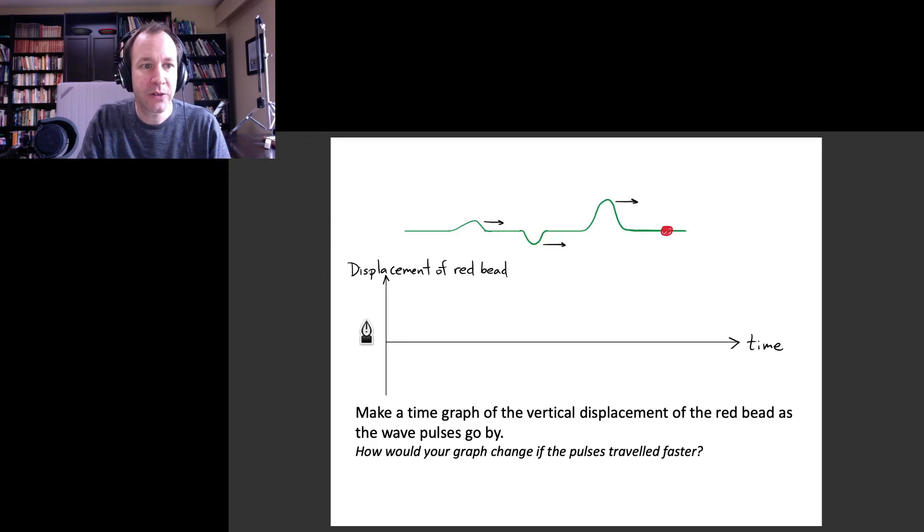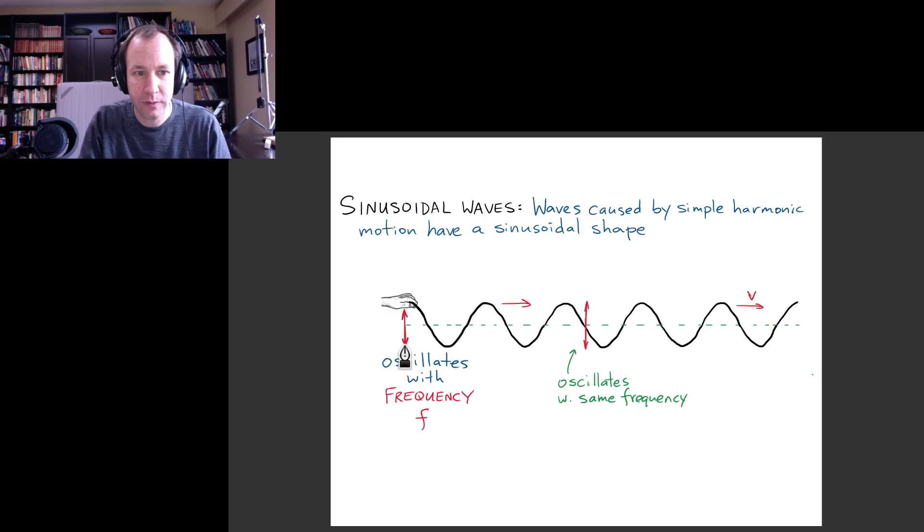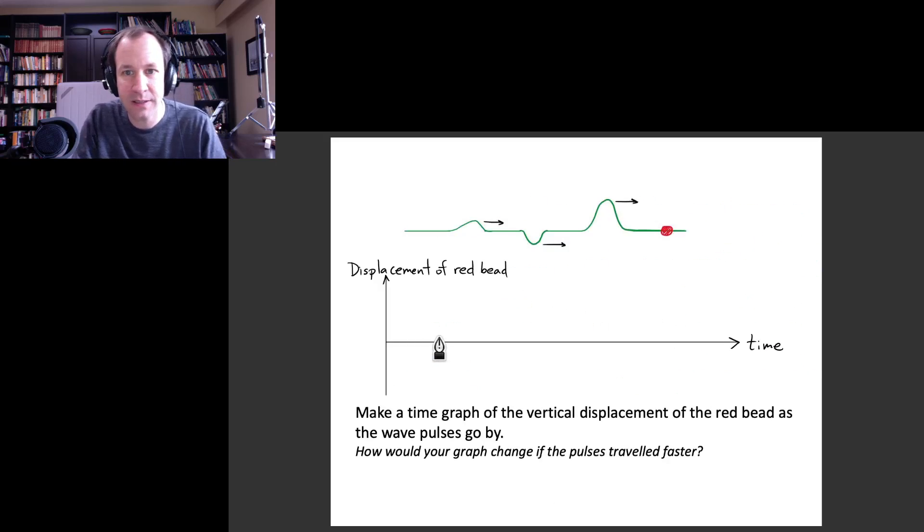What I can do here is think about making a graph, and so see at first the bead is going to be stationary until this first peak reaches it. And then at that point, what will happen is that the bead will go upward.